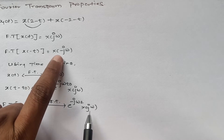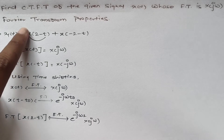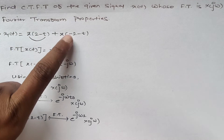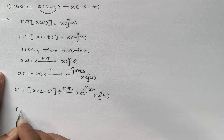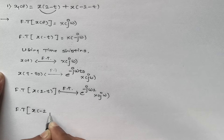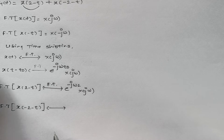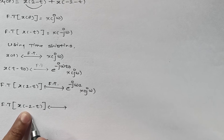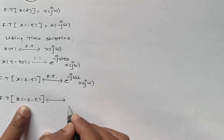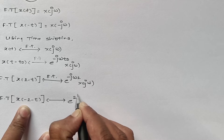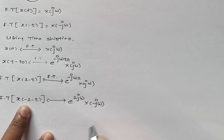By time reversal, the Fourier transform of x(-t) is X(-jω). Now, using time shifting: if x(t) has Fourier transform X(jω), then shifting by t₀ gives e^(-jωt₀)·X(jω). So the Fourier transform of x(2 - t) is e^(-2jω)·X(-jω). For x(-2 - t), the shift becomes +2, giving e^(+2jω)·X(-jω).